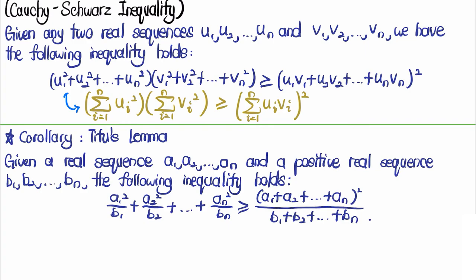Before ending, we look at a corollary of Cauchy-Schwarz called Titu's Lemma, which is also well known and useful for proving many inequalities. It states: given real sequences a₁, ..., aₙ and a positive real sequence b₁, ..., bₙ, we have a₁²/b₁ + a₂²/b₂ + ... + aₙ²/bₙ ≥ (a₁ + a₂ + ... + aₙ)² / (b₁ + b₂ + ... + bₙ).